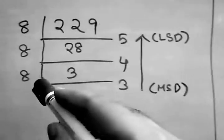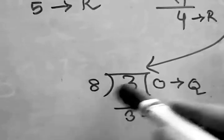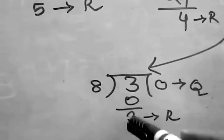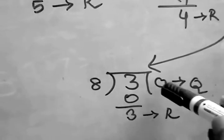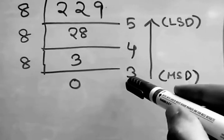Now we can see that 8 is greater than 3, so how can we divide? We can write it like this: 8 zeros are 0, 3 will sit here as remainder, and 0 will be the quotient. 0 will sit here as the quotient and 3 in the remainder place.